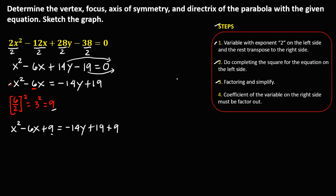Apply factoring and simplify. The factors of x squared minus 6x plus 9 give us x minus 3, all squared. On the right side, simplify: negative 14y, then 19 plus 9, which is positive 28. So we have (x minus 3) squared equals negative 14y plus 28.